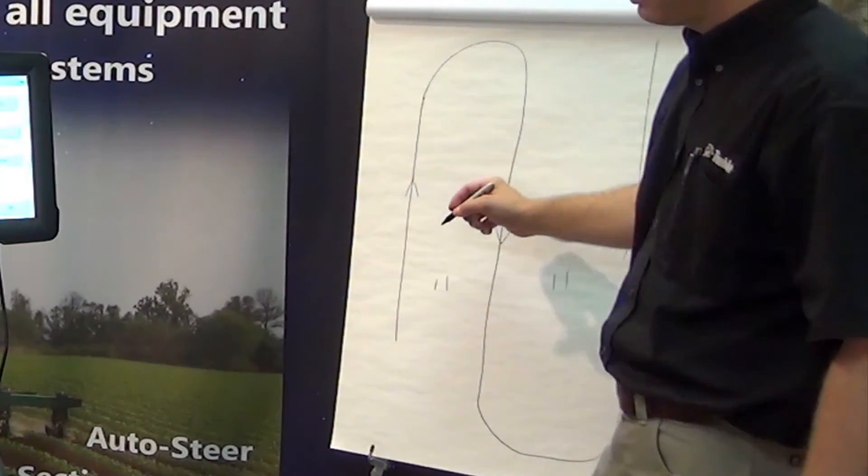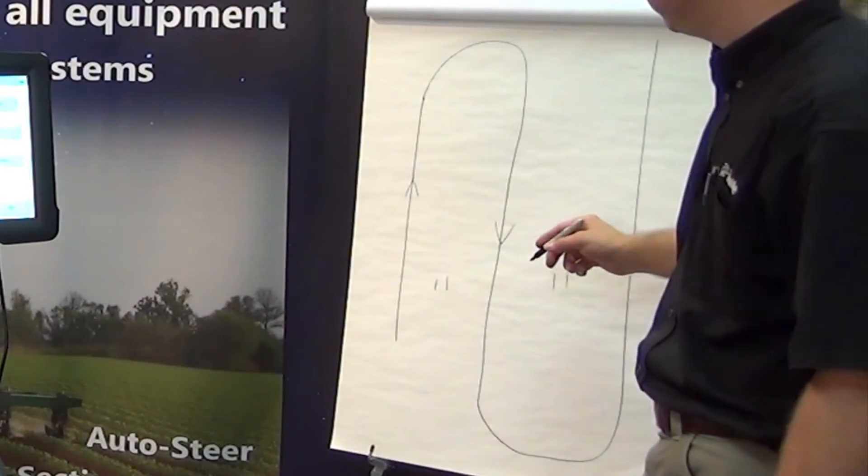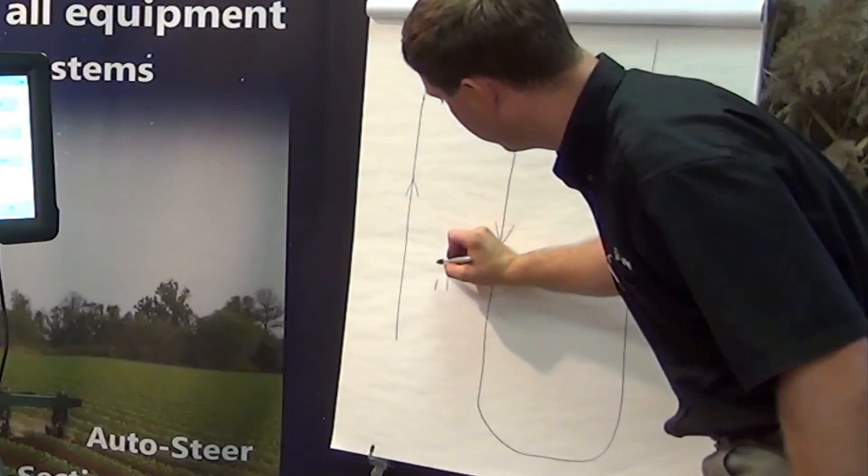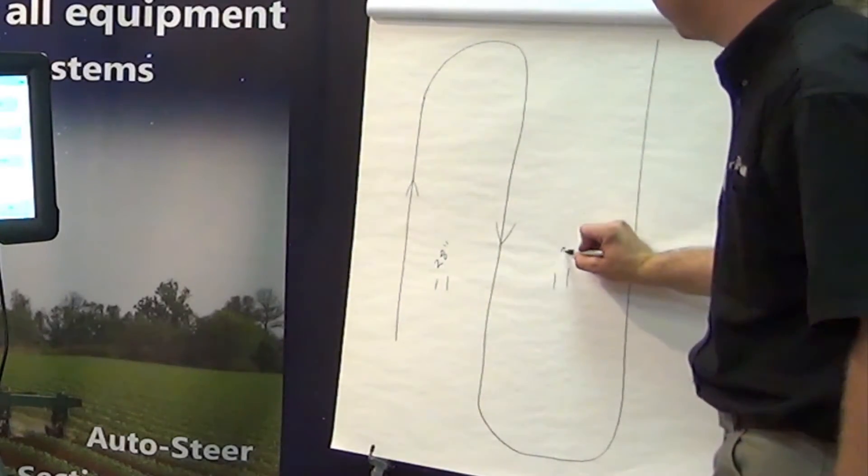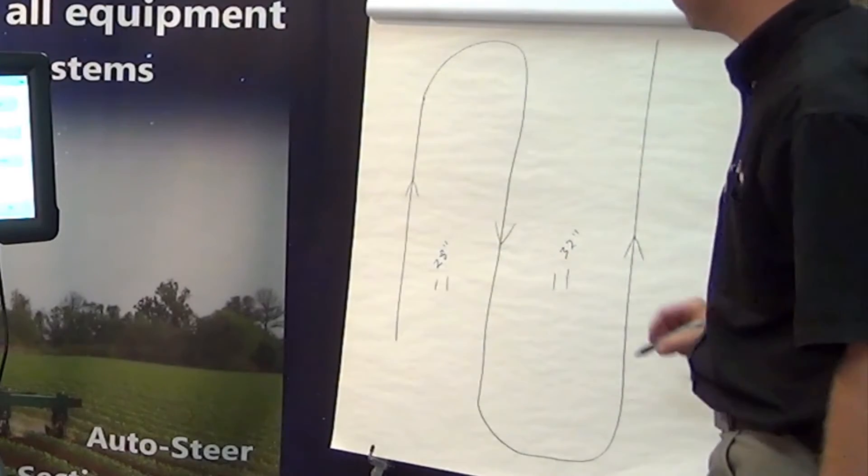If our guest rows are on 30 inch spacing, let's say we went out and measured and we're seeing 28 inches here and we're seeing 32 inches here.